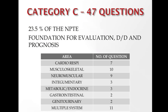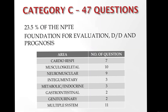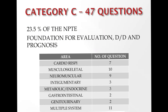Category C is foundations for evaluation, differential diagnosis, and prognosis for pediatric and adult populations. There are 47 questions, making it 23.5% of the NPTE — the largest category. It covers differential diagnosis, diagnostic imaging, medical and surgical management, psychiatric and psychological conditions, multiple system involvement, and pathologies affecting connective tissues. Subcategory breakdown: cardio 7, musculoskeletal 10, neuromuscular 9, integumentary 3, metabolic or endocrine 3, gastrointestinal 2, genitourinary 2, and multiple system involvement 11.